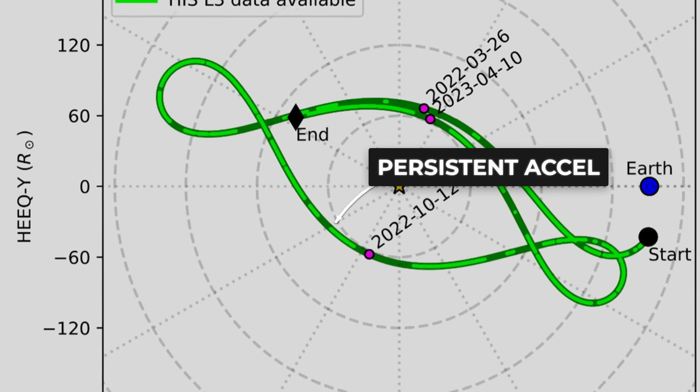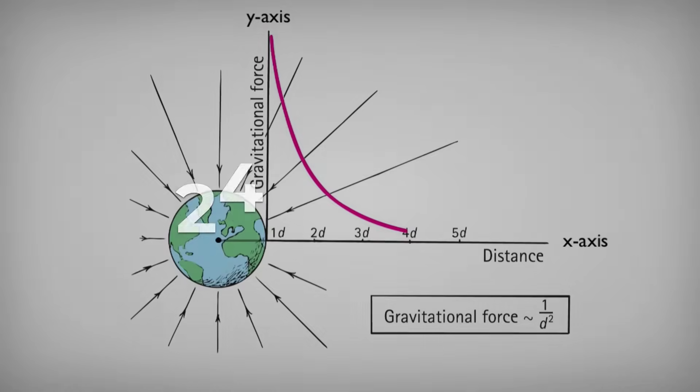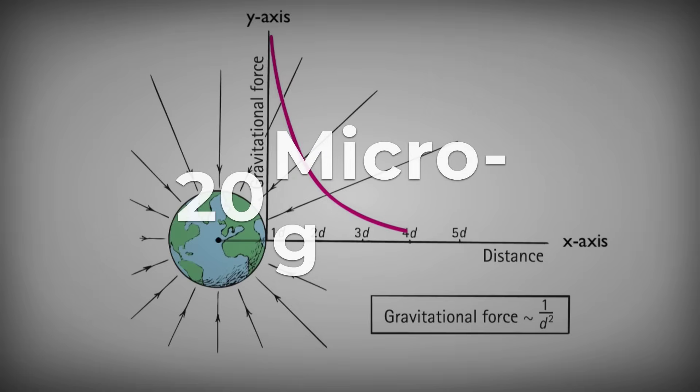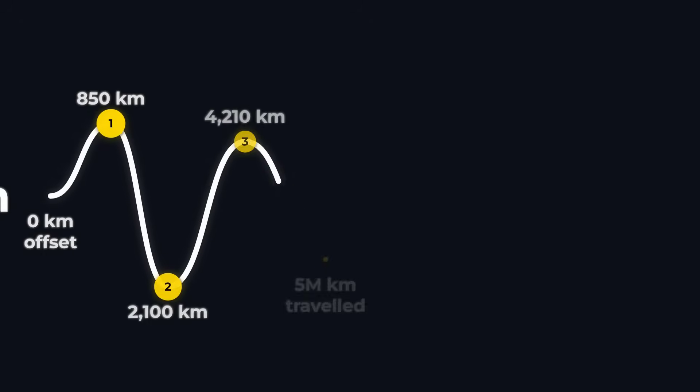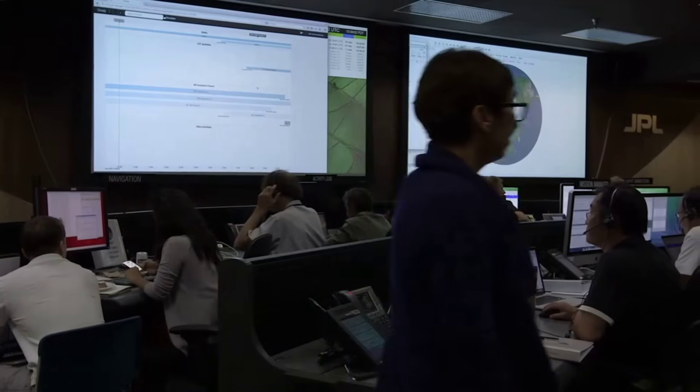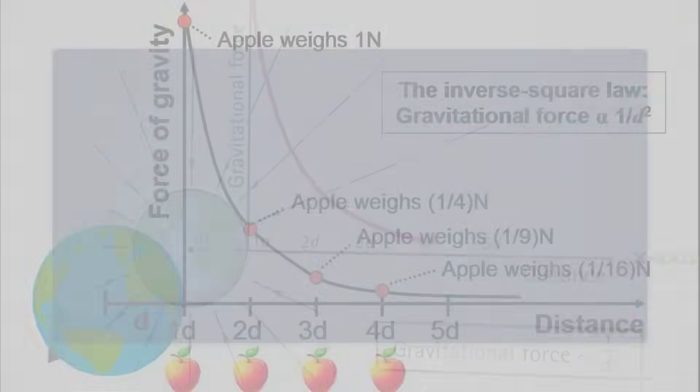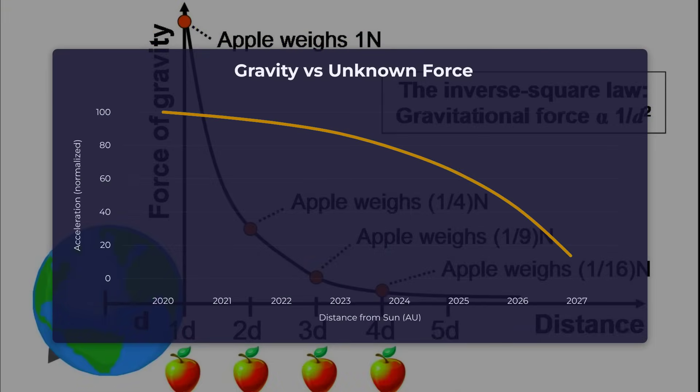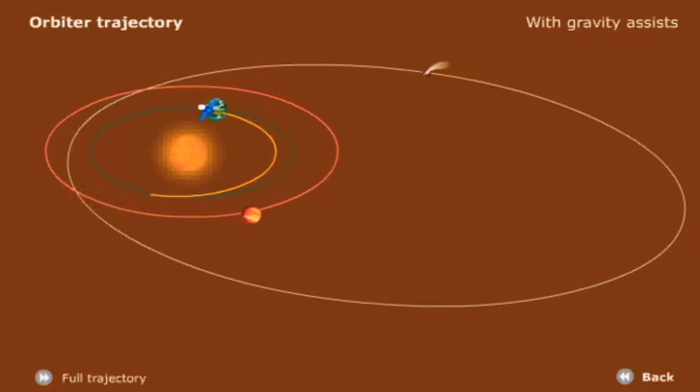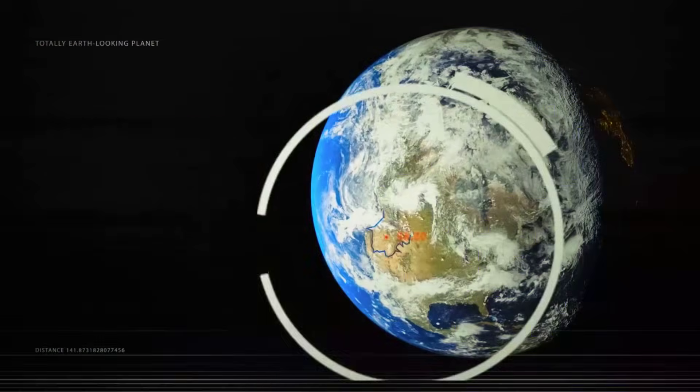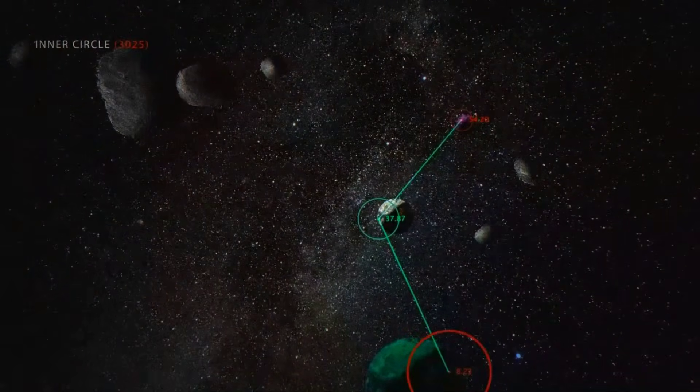Instead, they reveal a persistent outward acceleration, roughly 0.00002 times the force of solar gravity. Over a single night, this is almost imperceptible. But over millions of kilometers, the effect is real and measurable. What stands out is not just the magnitude of the push, but its mathematical behavior. Both the sun's gravity and this extra force weaken with distance in exactly the same way, with the square of the distance from the sun. That means the ratio between the mysterious push and gravity stays constant, whether 3I Atlas is near Mars or halfway to Jupiter.